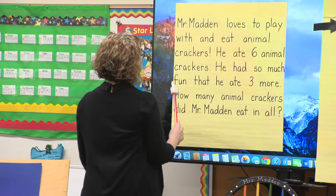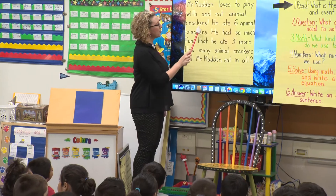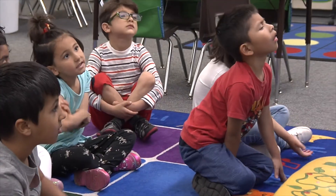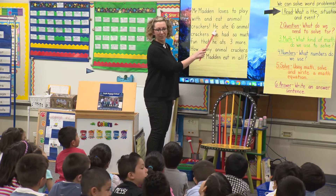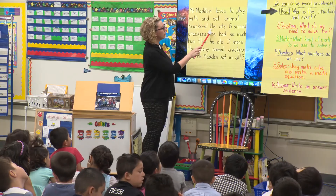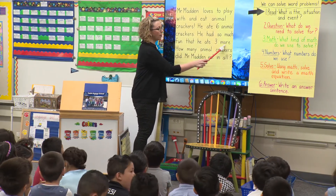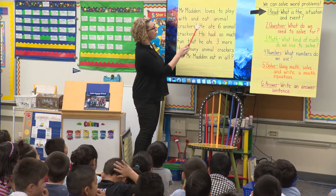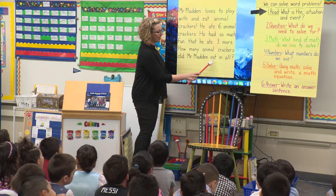Today we're going to read our new word problem. And you know how to solve word problems. Mr. Madden loves to play with and eat animal crackers. Who is this situation about? Mr. Madden. And there he is, Mr. Madden. He ate six animal crackers. He had so much fun that he ate three more. Three more what? Animal crackers. How many animal crackers did Mr. Madden eat in all?